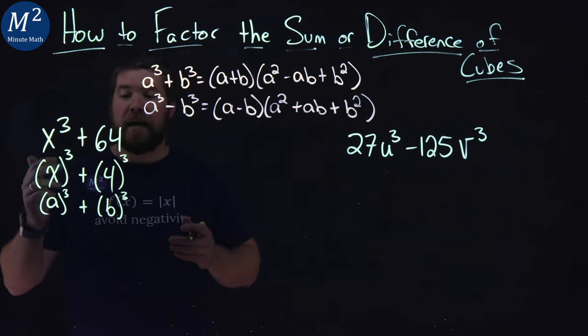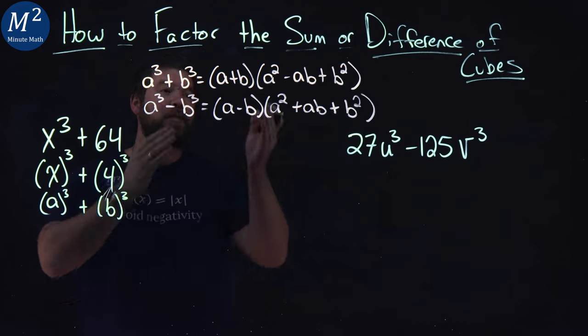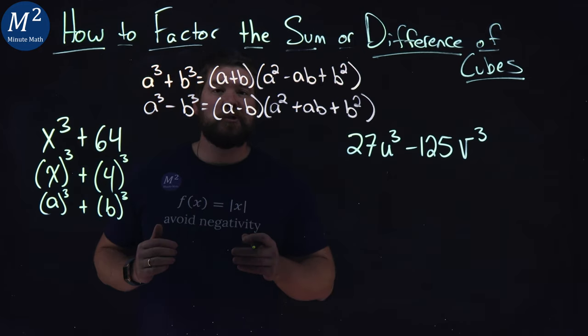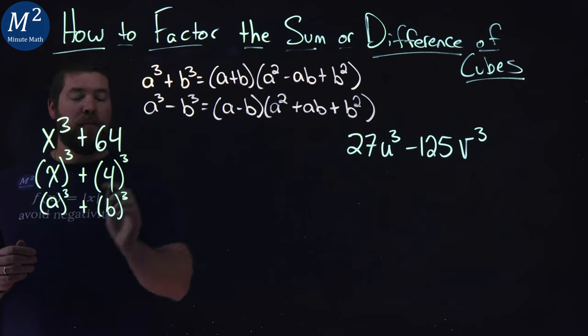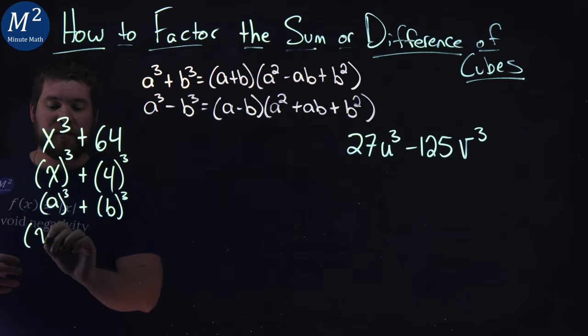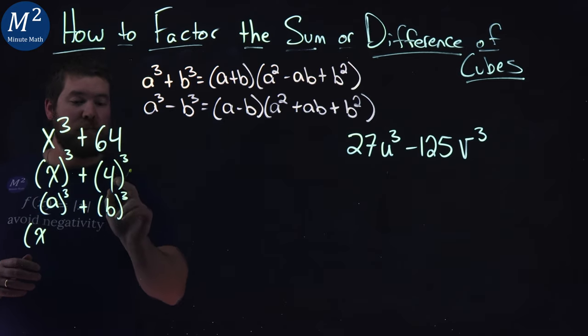So we can see a is x and b is 4 and now it's a plug and play into our formula.